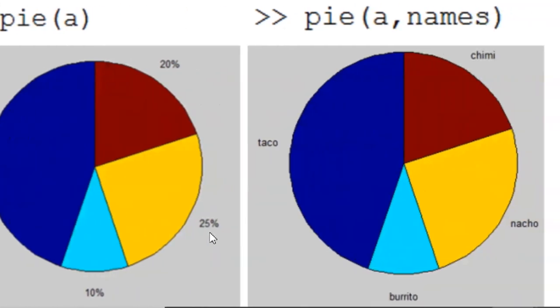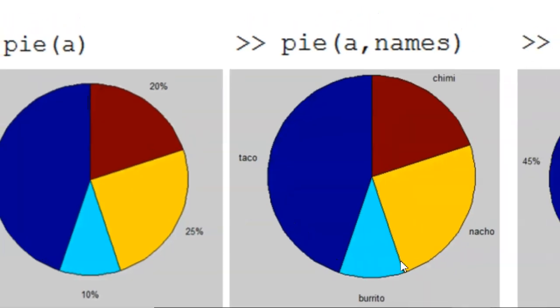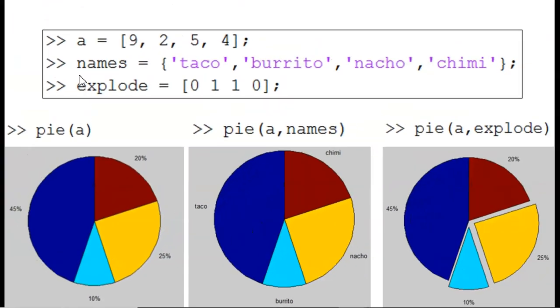Instead of percentages, we can have names for each slice. For this, we need a cell array containing the names to write within single quotes. This works much like the legend function. Each entry within the names array corresponds with an entry in the same position in the data vector.